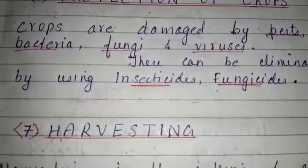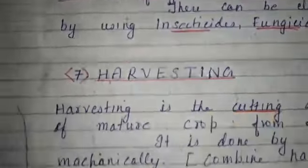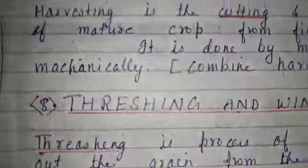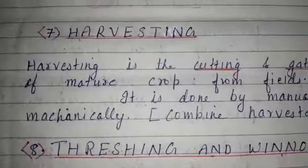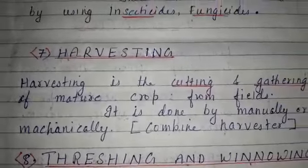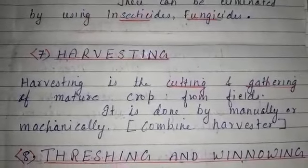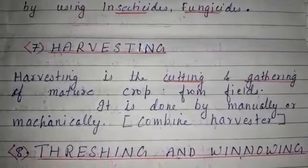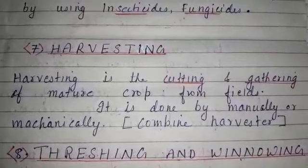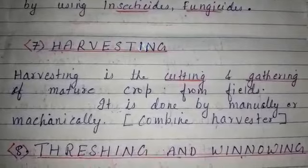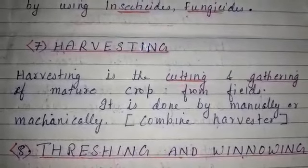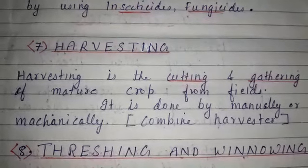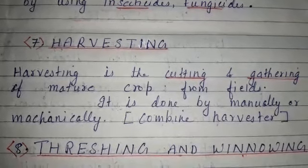The seventh step is harvesting. Harvesting is the cutting and gathering of mature crops from the field. It is done both manually and mechanically.